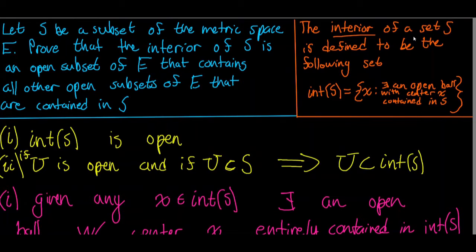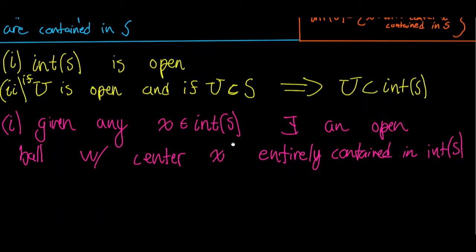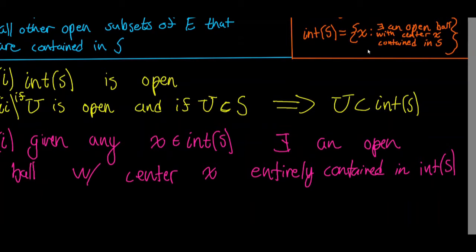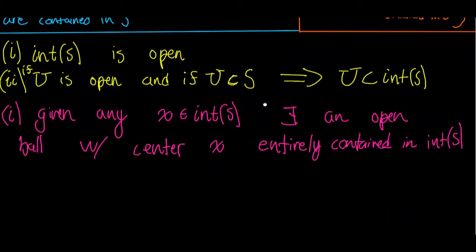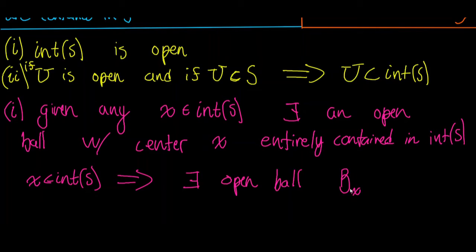The interior of S is the set of all points X such that there exists an open ball with center X contained in S. So we know that X is in the interior of S — let's leverage that fact. If X is in the interior of S, that implies there exists an open ball, I'll call it B sub X, with center X that is entirely contained in S — not the interior of S, but S itself.